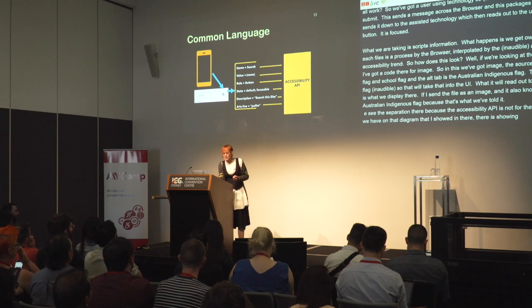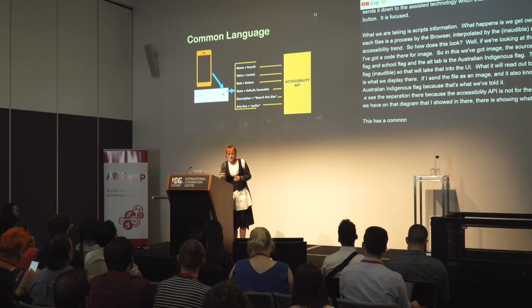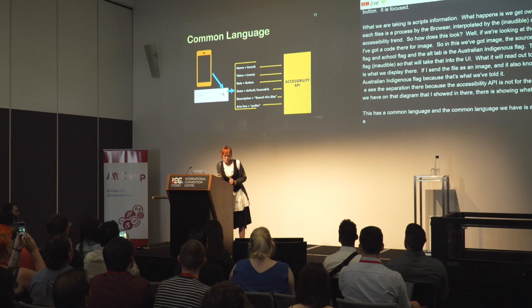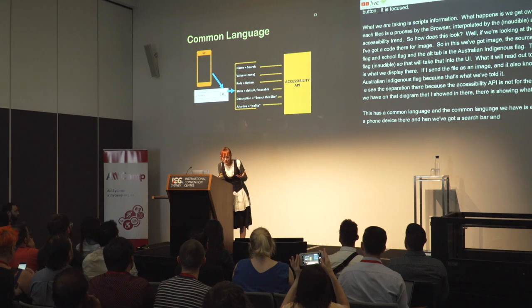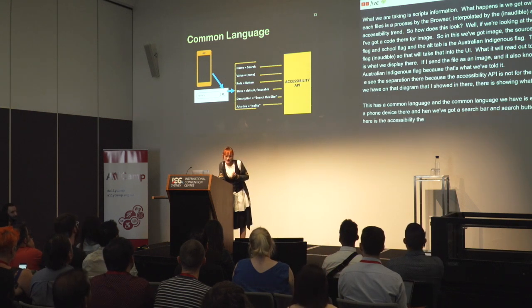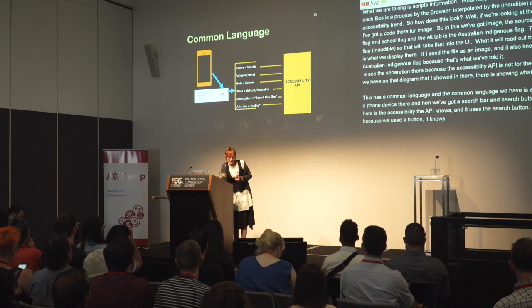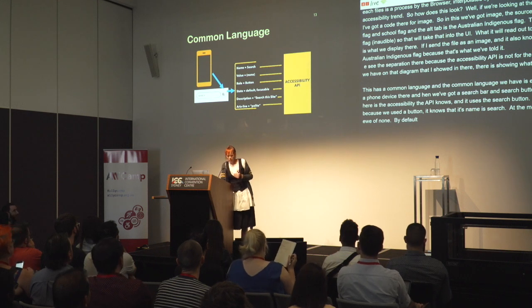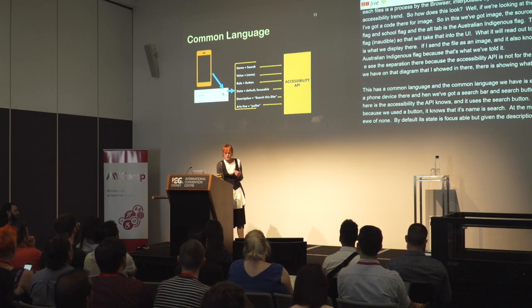This all works because it has a common language, and the common language we have is that HTML elements are explicit. Here I've got a phone device with a search bar and a search button. The accessibility API knows — because we've used a button element — that its role is a button, its name is 'search', its value is none, its state is focusable by default, we've given it a description of 'search this site', and an ARIA live of 'polite'. That's the information the accessibility API will take in and process for assistive technologies.